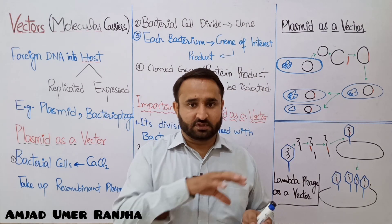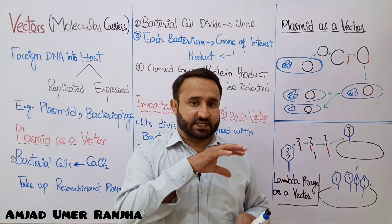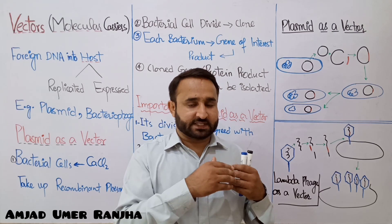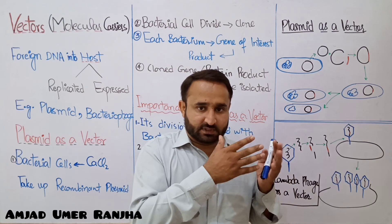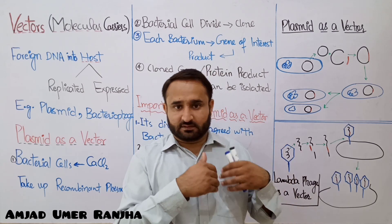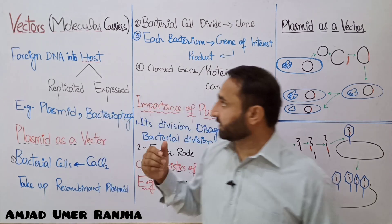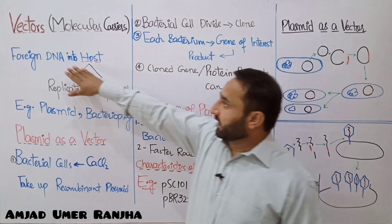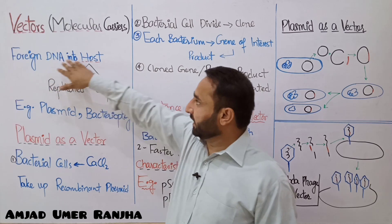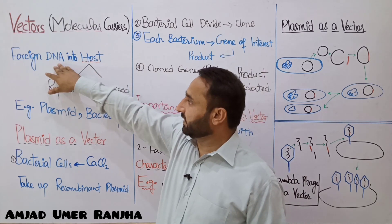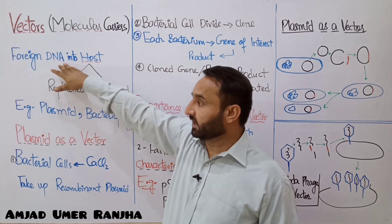The substance or thing which carries the desired gene from the source into the host is called a molecular carrier or vector. It takes the foreign DNA into the host and puts the foreign DNA, desired gene, or gene of interest into the host.